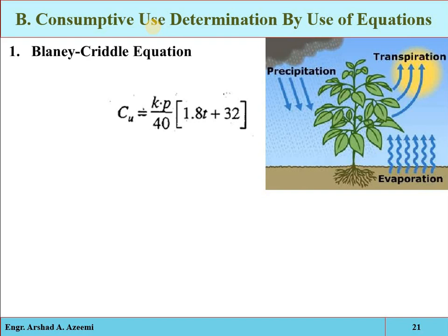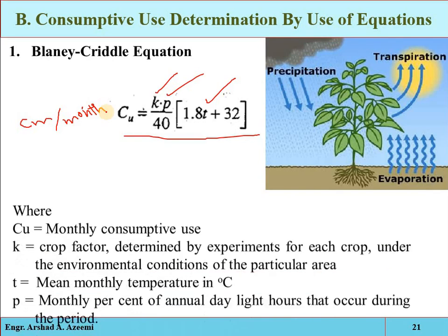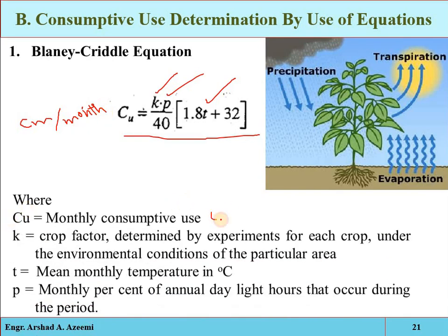The Blaney-Criddle equation is a relatively simplistic method for calculating evapotranspiration, because only three parameters are utilized. The equation gives the consumptive use by a specific crop in centimeters per month — it is used to determine the monthly consumptive use of a specific crop at a given area under given climatic conditions. Here, CU is the monthly consumptive use in centimeters, and T is the mean monthly temperature.